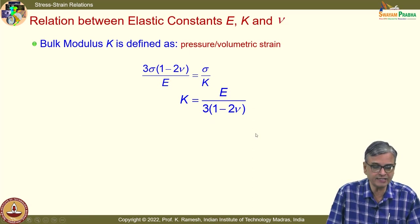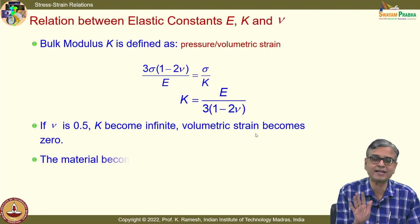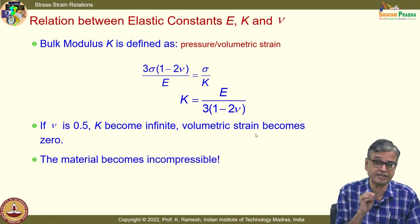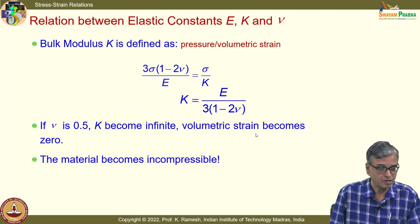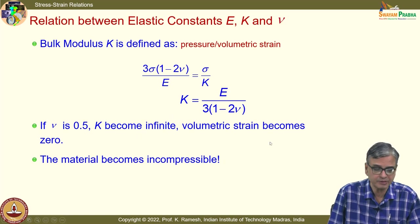What you find is it is enough to have only two elastic constants to characterize an isotropic material — the greatest simplification achieved. We also looked at the extremum values of Poisson's ratio. When ν = 0.5, K becomes infinite and volumetric strain becomes zero — the material becomes incompressible. When ν = −1, you have the other story for G.